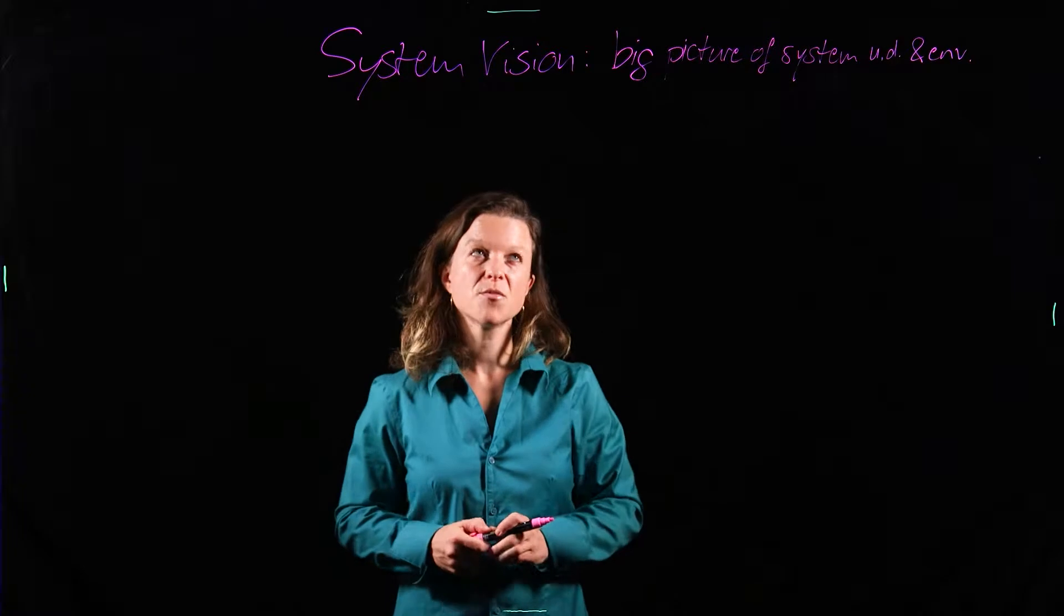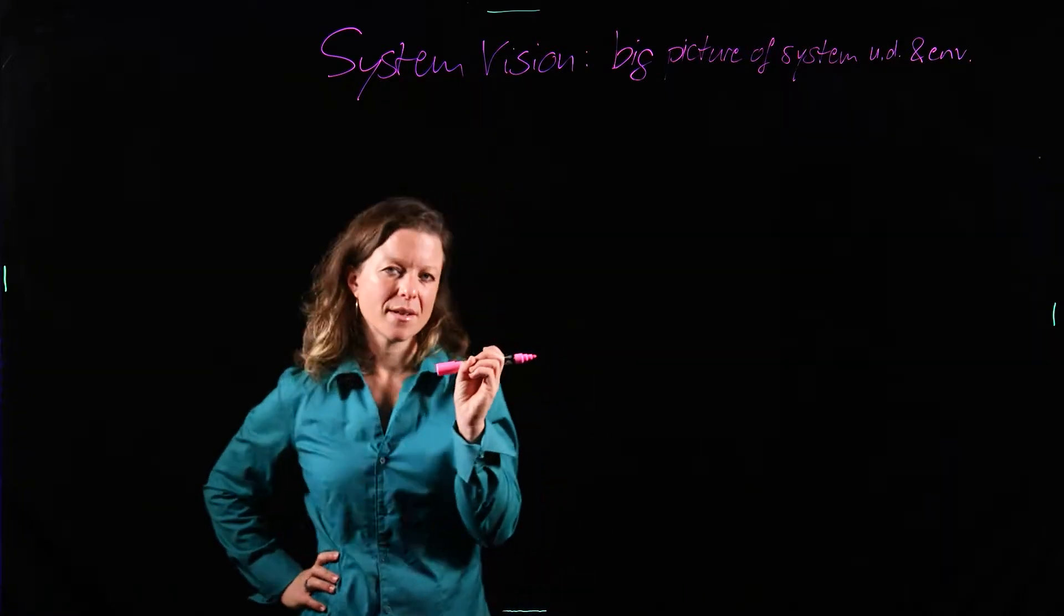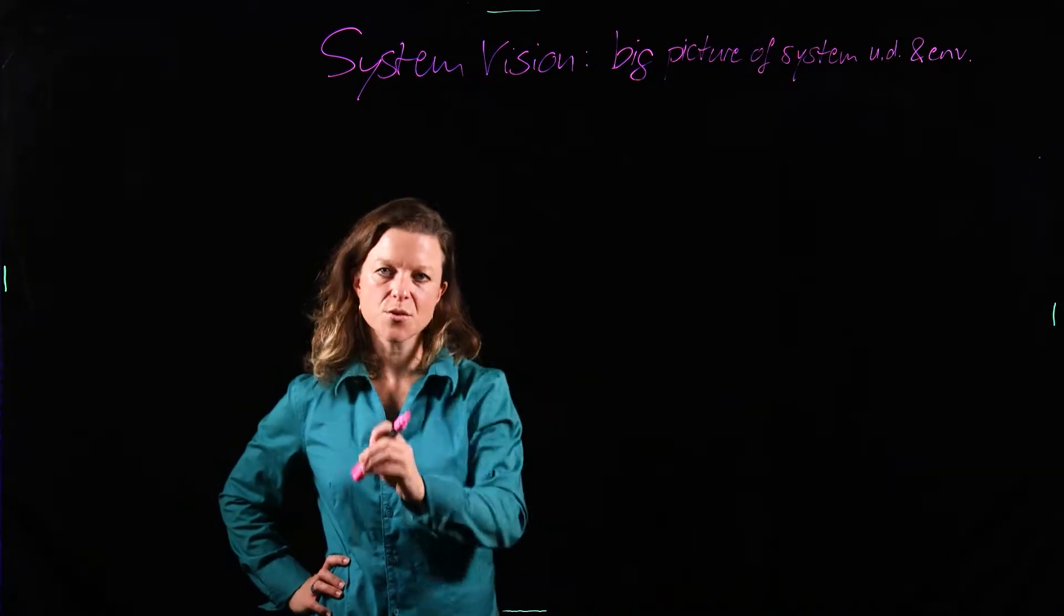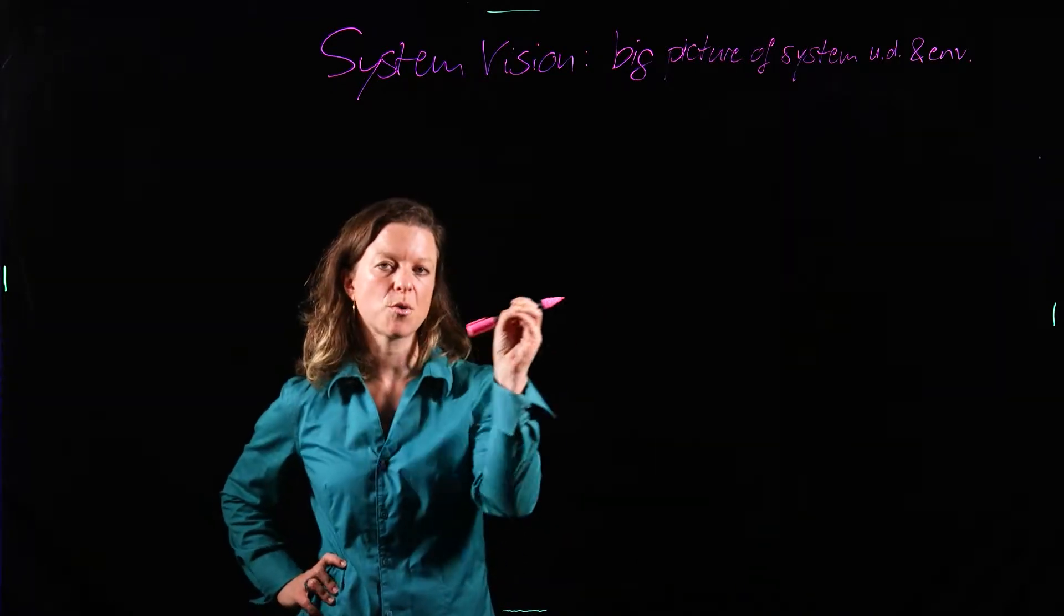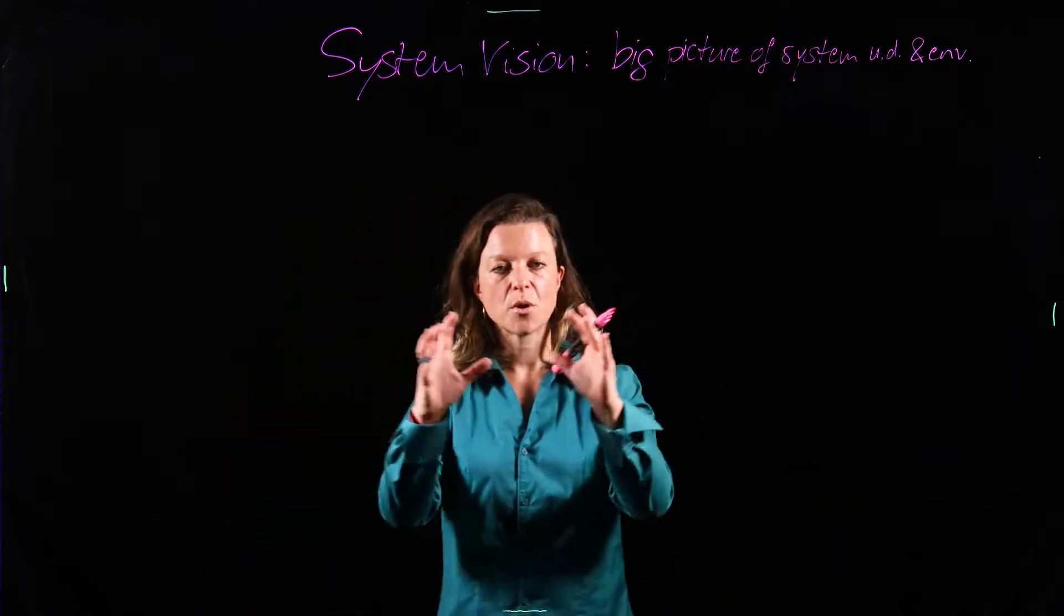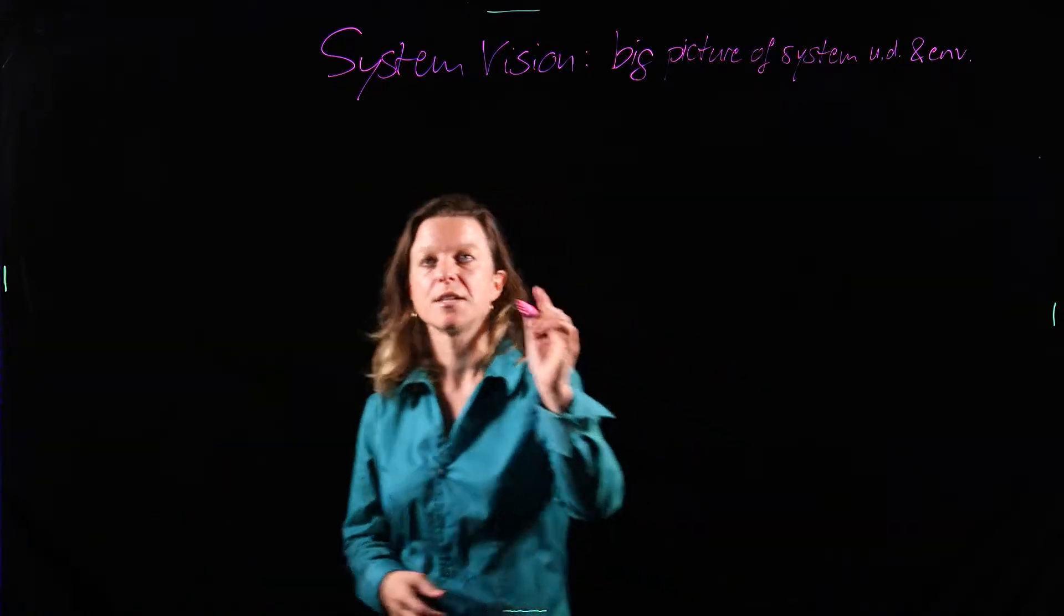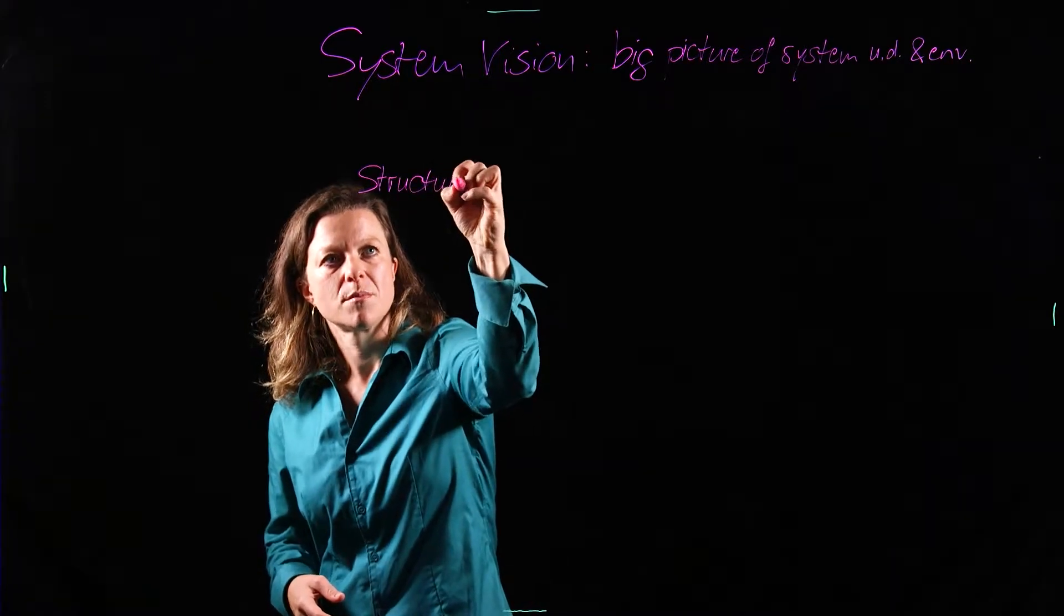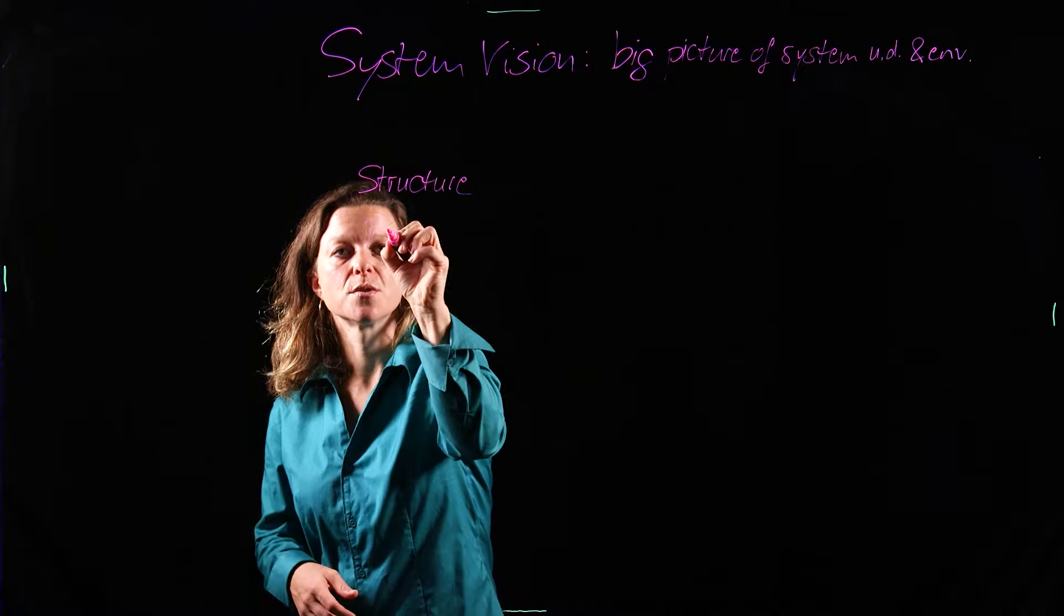So the system vision, you can think about it in terms of you take some cute little icons from the internet to make visual representations for all parts of your system and then you compose that into a picture that includes the structure of your system, the process, and the concerns.